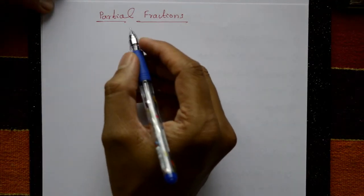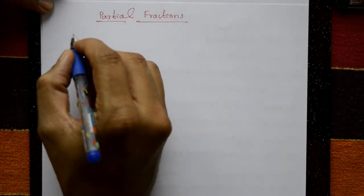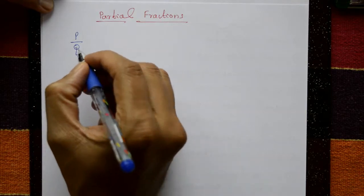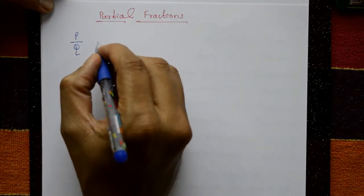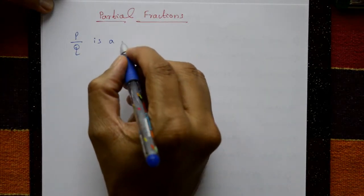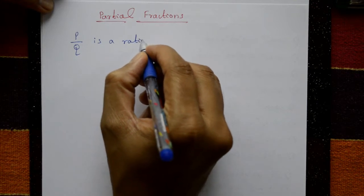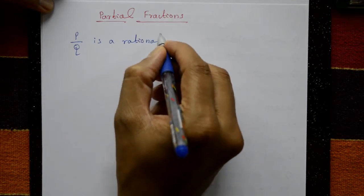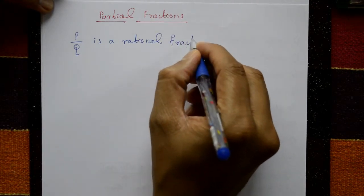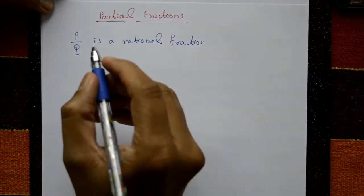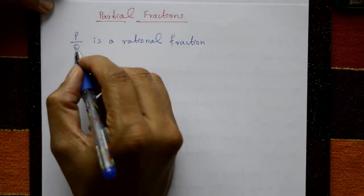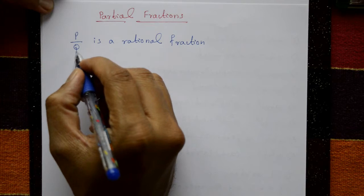Partial fractions. P by Q is a rational fraction. This is very simple — P is the numerator part and Q is the denominator part.